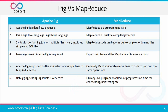Pig provides users with several advantages over using MapReduce directly. Apache Pig is a data flow language, meaning it allows users to describe how data from one or more inputs should be read, processed, and stored to one or more outputs in parallel. MapReduce, on the other hand, is a programming style. Apache Pig has a high-level, English-like language, while MapReduce is usually combined Java code.